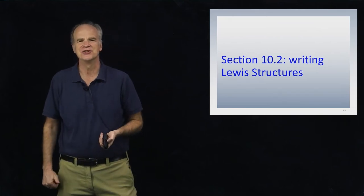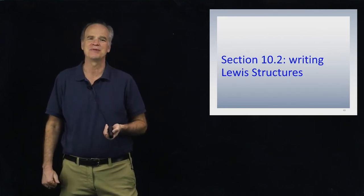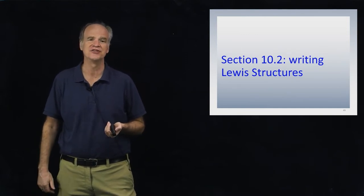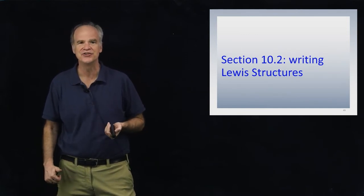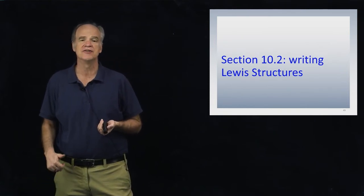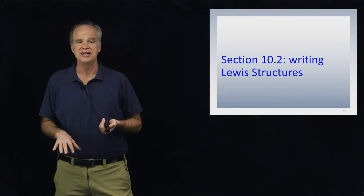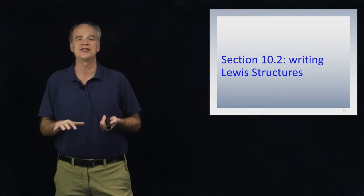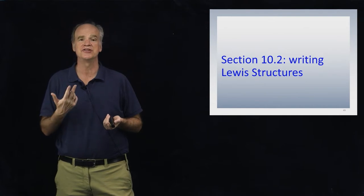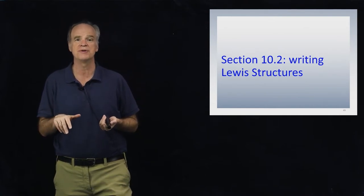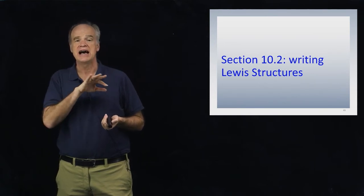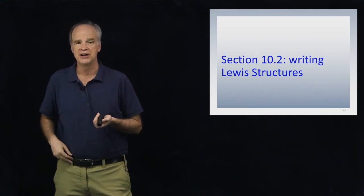Hey everybody, welcome back to Chemistry. Today I want to talk about writing something called a Lewis structure. A Lewis structure is a simple drawing or representation of a molecule. In that drawing, you'll see lines and dots. Lines between the atoms represent a shared pair of electrons, while dots on the outsides of the atoms represent lone pairs.